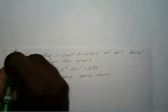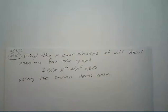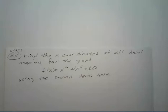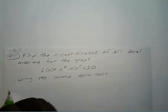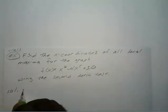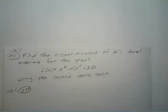I want you to press pause and try to work this one out using the very same steps from the previous example. Assuming you've pressed pause and worked it out, let's go through it. Step one: find your critical points — find the points where your first derivative is equal to zero.